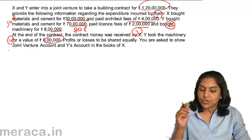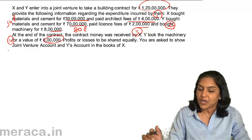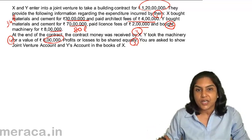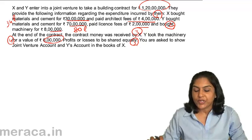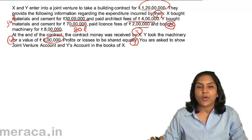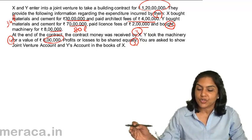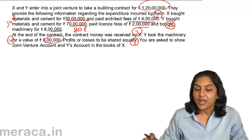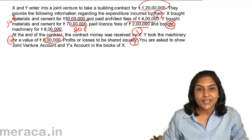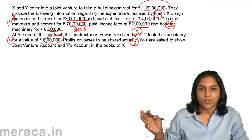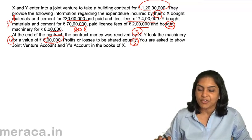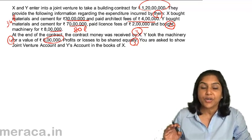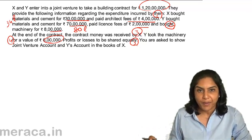We are asked to show the joint venture account and Y's accounts in the books of X, with profits and losses shared equally. There would also be a final entry for settlement — either X has to pay Y or Y has to pay X. Since X received the contract money, in all likelihood X will have to pay Y.